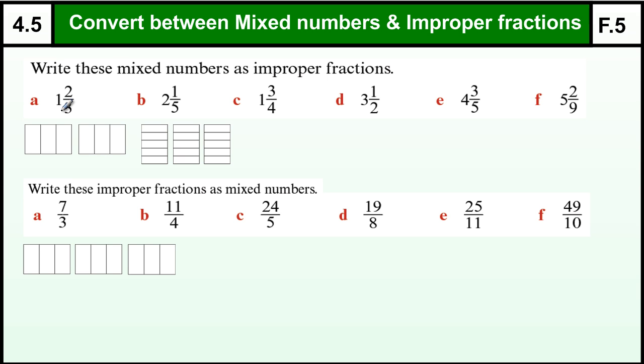What you are actually supposed to be trying to do is convert between a mixed number, which is a whole number and a fraction, and an improper fraction, which is one where the top is bigger than the bottom. Sometimes that is called a top-heavy fraction.